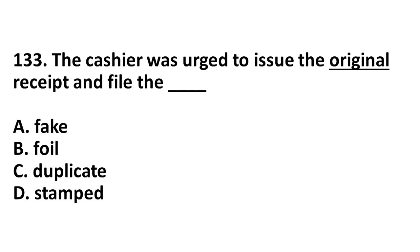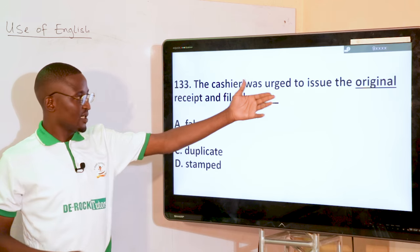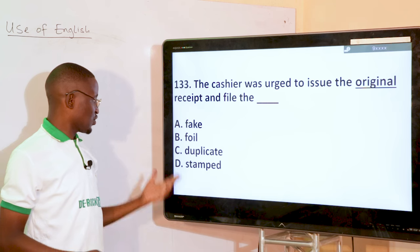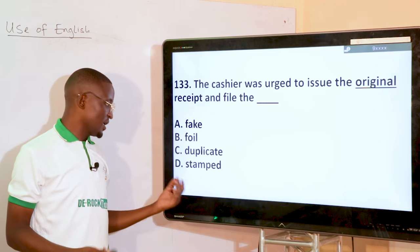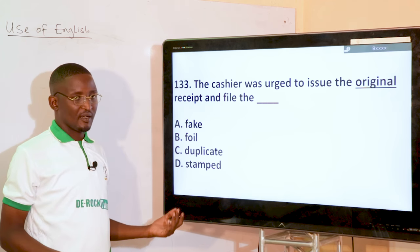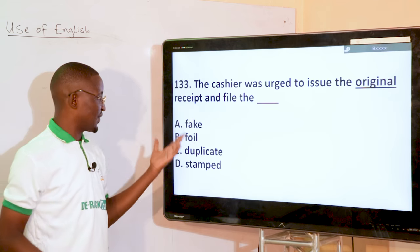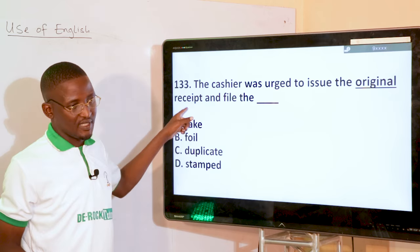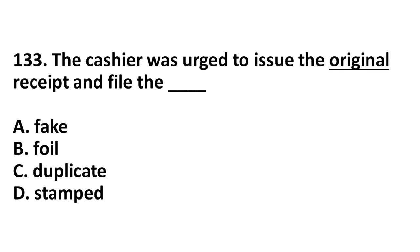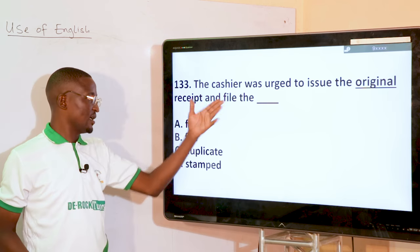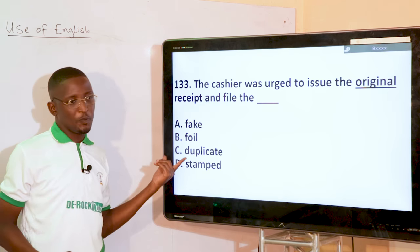The cashier was urged to issue the original receipt and file the dash. 'Original' is the underlined word. You might think of 'fake,' but we are talking about receipts. The cashier is to issue the original and file the duplicate. So 'duplicate' is the correct antonym that also fits the context.